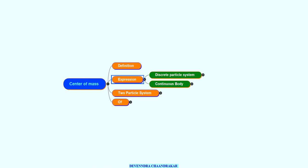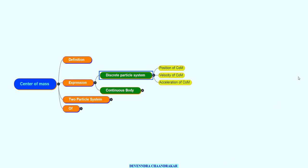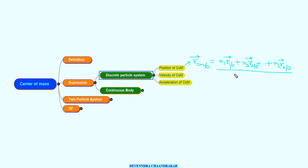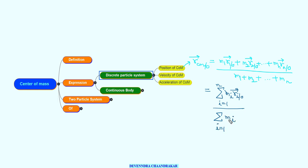Let's move ahead with the expressions. In the discrete particle system, the position of center of mass is called x_cm. With respect to some point O, it equals (m1·r1 + m2·r2 + … + mn·rn) divided by the total mass (m1 + m2 + … + mn). In short, it is (Σ mi·ri) / (Σ mi) for i = 1 to N.